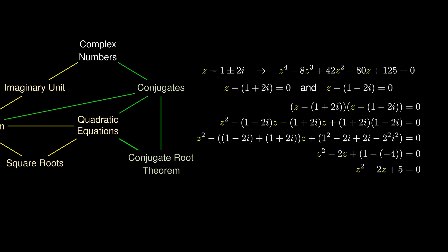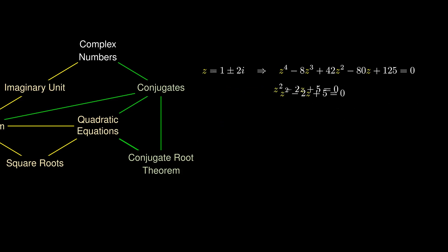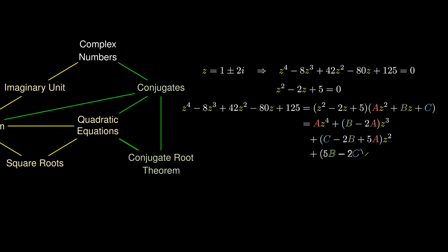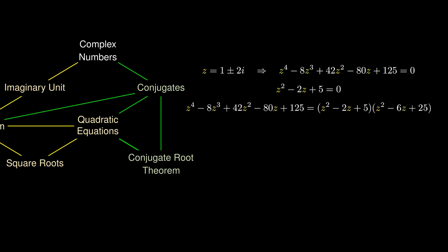By the factor theorem, z² - 2z + 5 is a factor of the 4th-degree polynomial. Expanding the right-hand side and comparing coefficients, we can obtain a, b, and c. Back-substituting these values gives the other quadratic factor z² - 6z + 25 = 0.